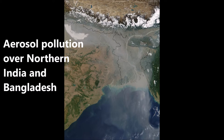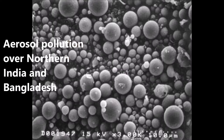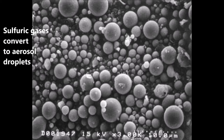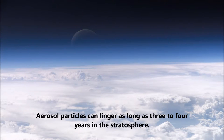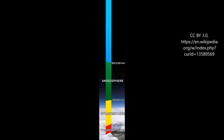Sulfuric gases convert to aerosol droplets containing about 75% sulfuric acid. These aerosol particles can linger as long as three to four years in the stratosphere.